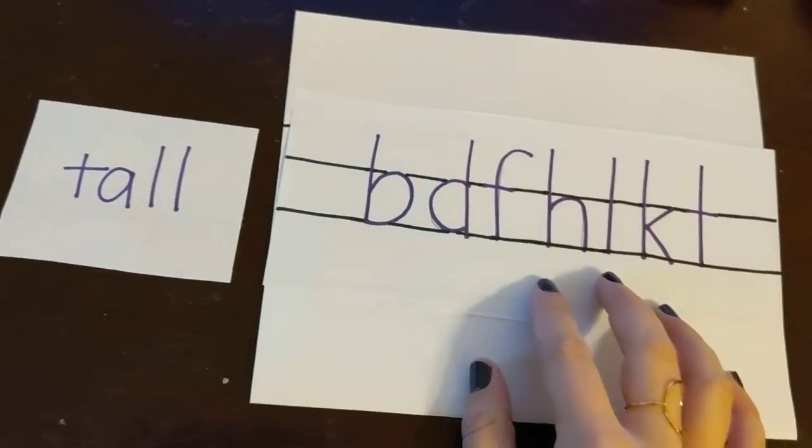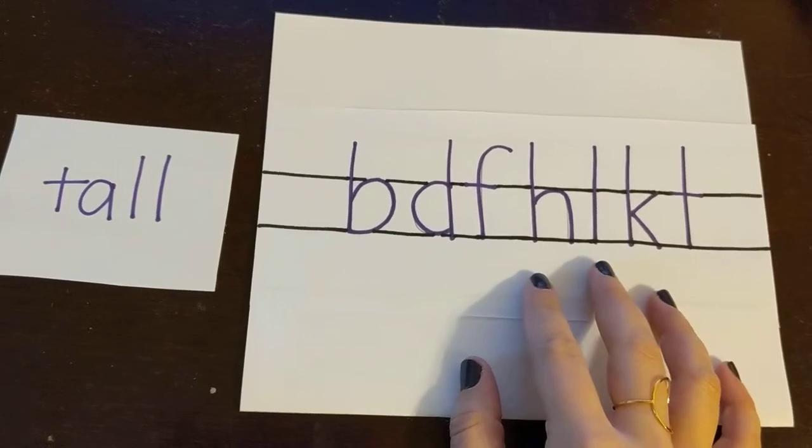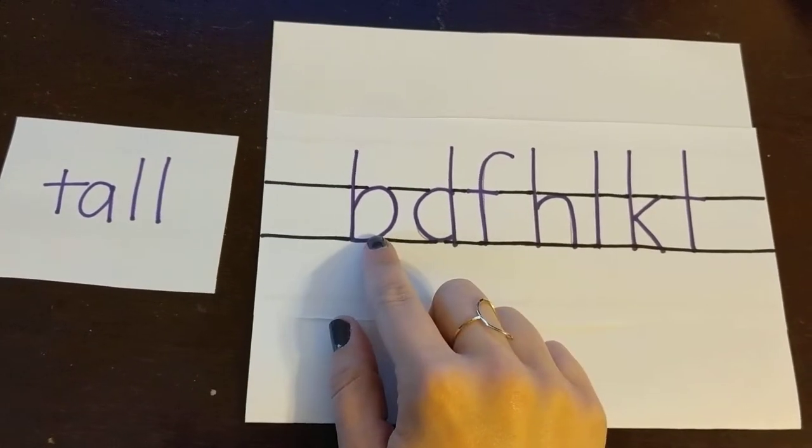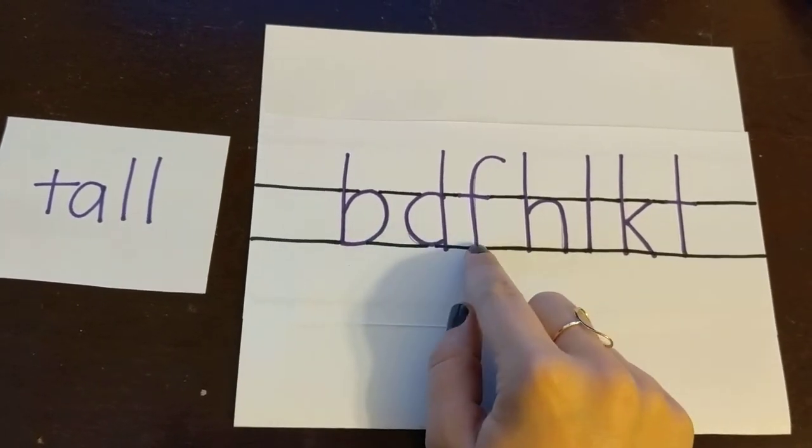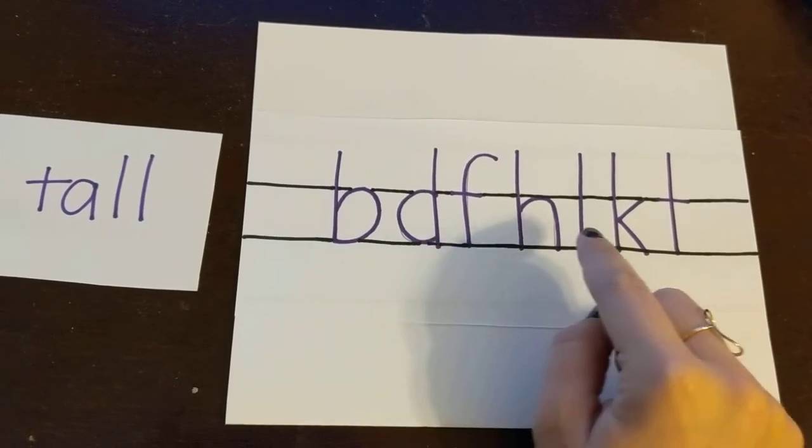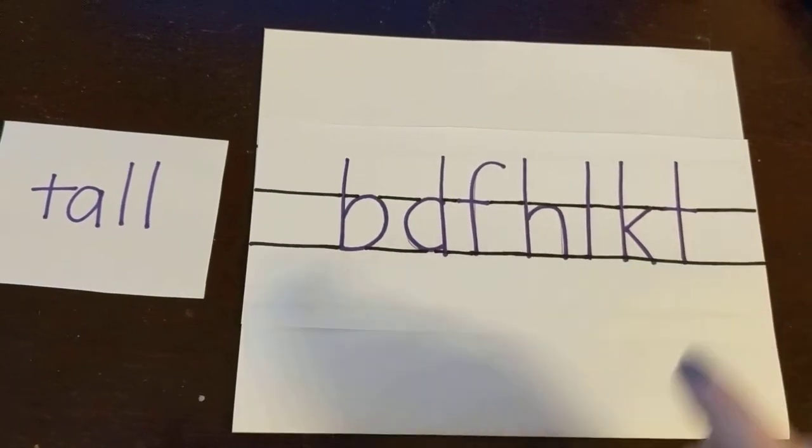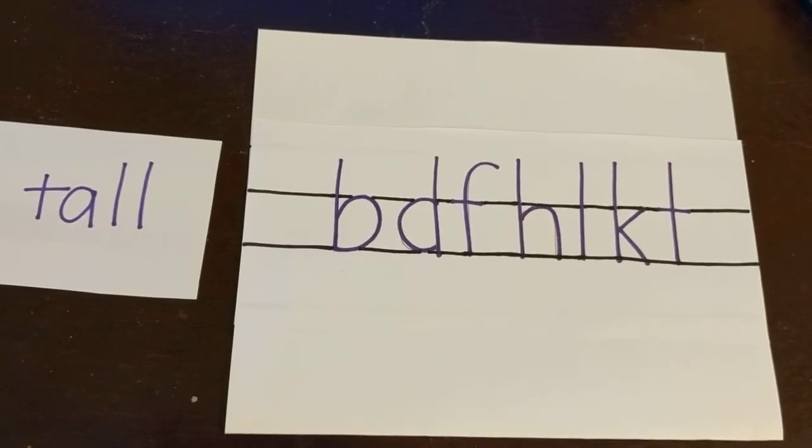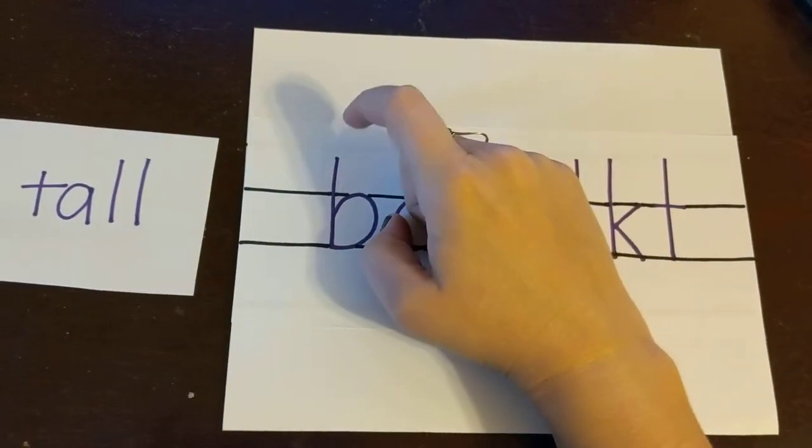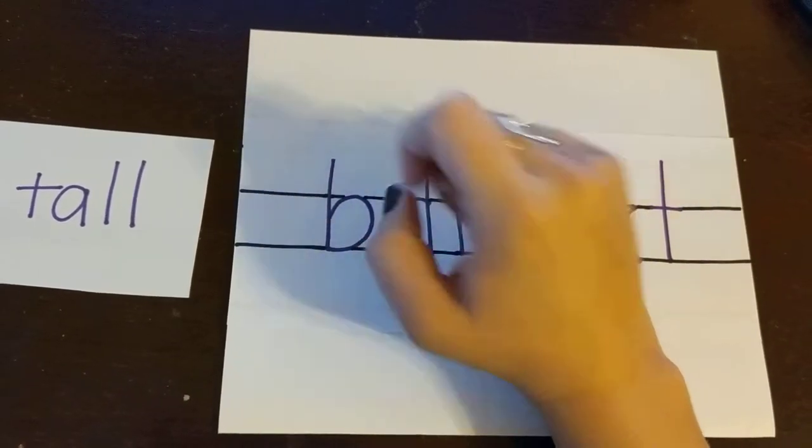Examples of tall letters include B, D, F, H, L, K, and T. Tall letters start up above the lines where capital letters start.